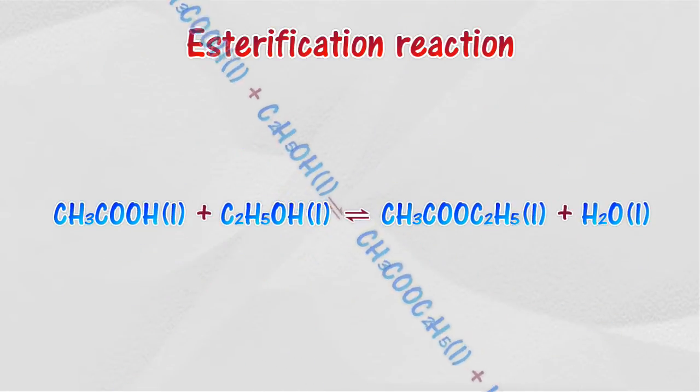Esterification reaction. The reaction of carboxylic acid with an alcohol to form an ester is known as esterification reaction. When ethanoic acid reacts with ethanol in the presence of an acid, ethyl ethanoate is formed.